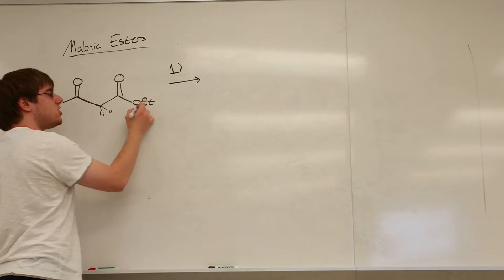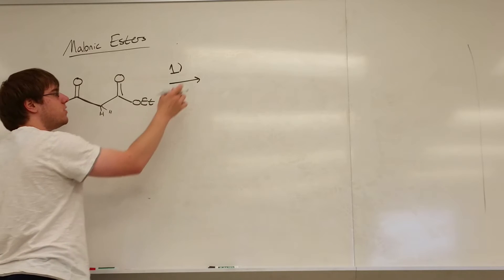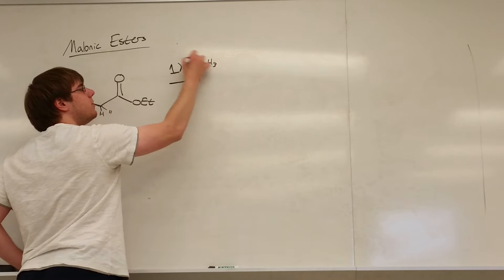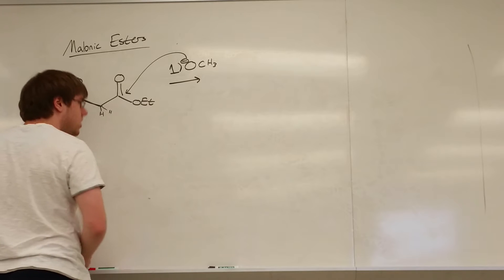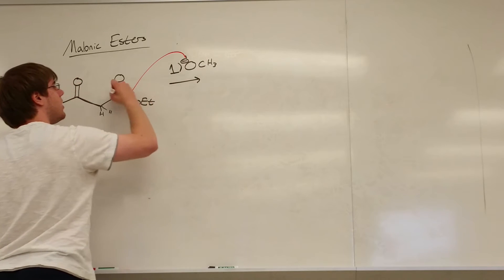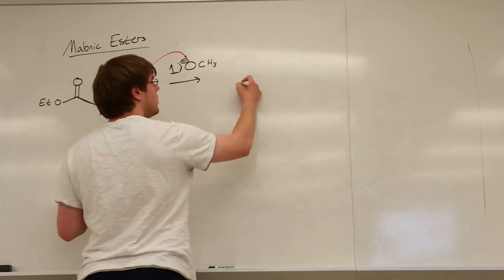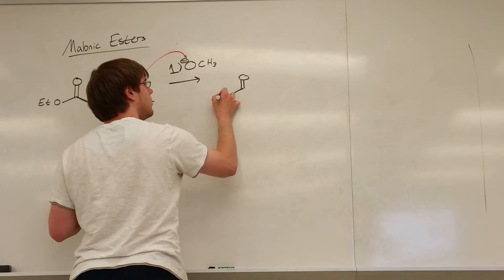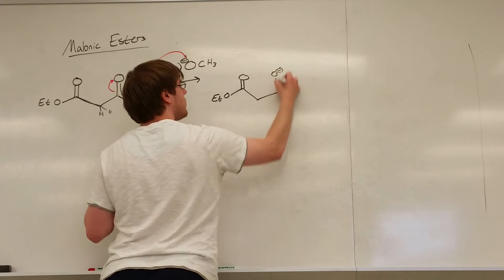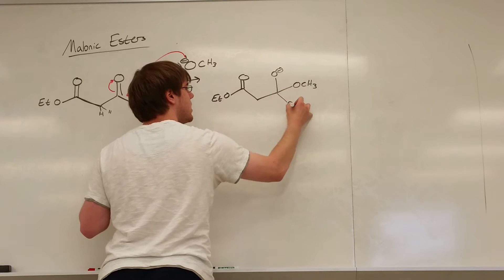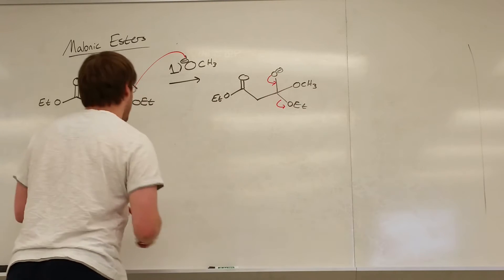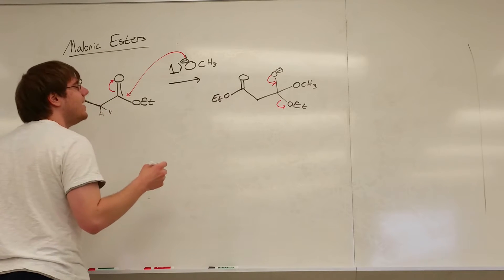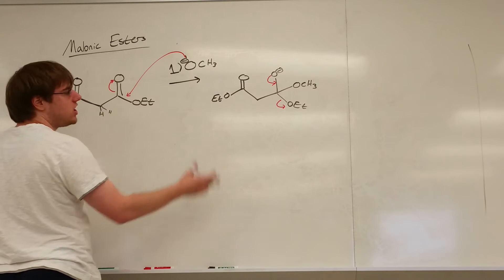The base that you use should always match the OR group of the ester, because if you use a different base, for example if I use OCH3-, well OCH3- can pull off these hydrogens, but it can also attack the carbonyl. And if OCH3- does attack that carbonyl, if that OCH3- attacks the carbonyl, that carbonyl would swing up and you would get O-, the OCH3- that attached, and the OET that was there to begin with. And when that O- swings down it can kick out the OET, and so what you would end up doing is something called transesterification, which means you're changing the OR group of your ester.